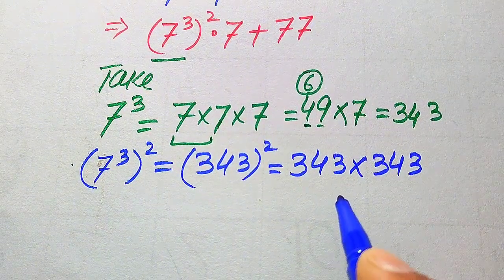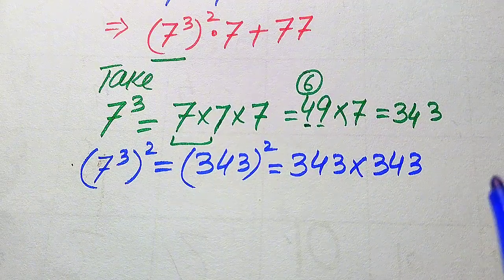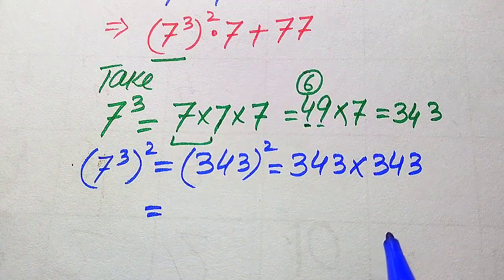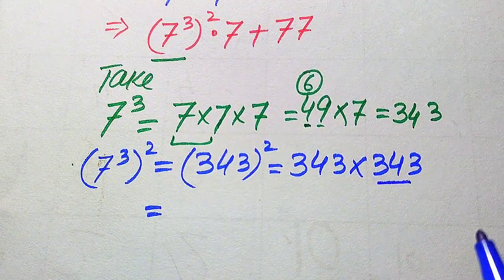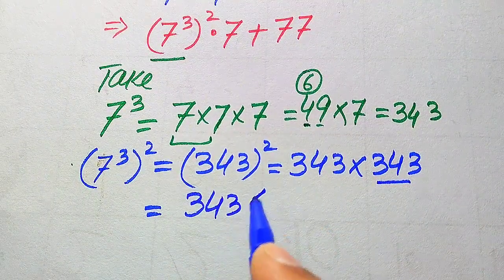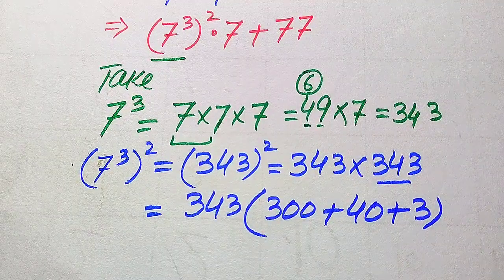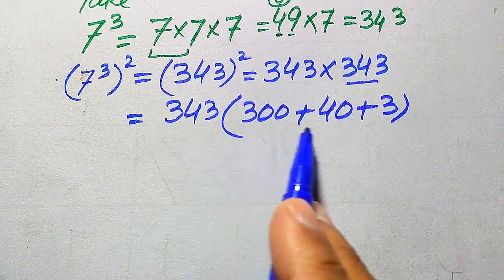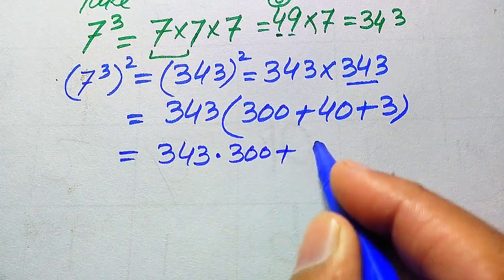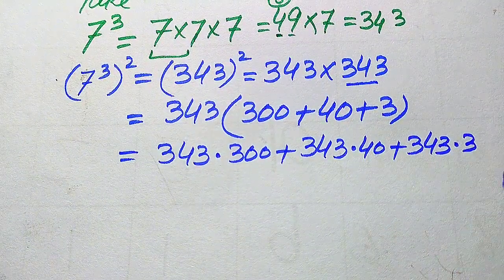These are two big numbers, so I give you a nice trick to multiply them without using a calculator or any traditional long multiplication method. We first break 343 into hundreds, tens, and ones: 343 equals 300 plus 40 plus 3. Now we multiply 343 separately by each of these three values: 343 multiplied by 300, plus 343 multiplied by 40, plus 343 multiplied by 3.